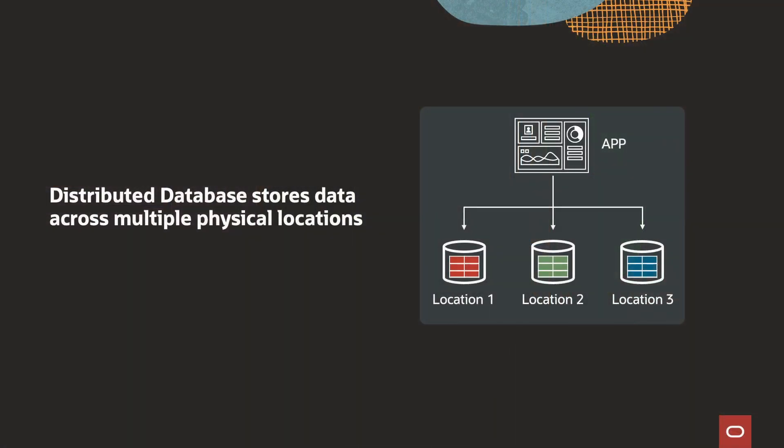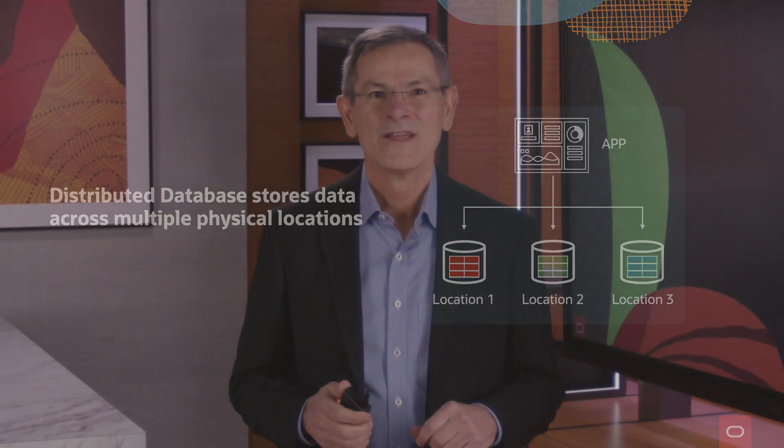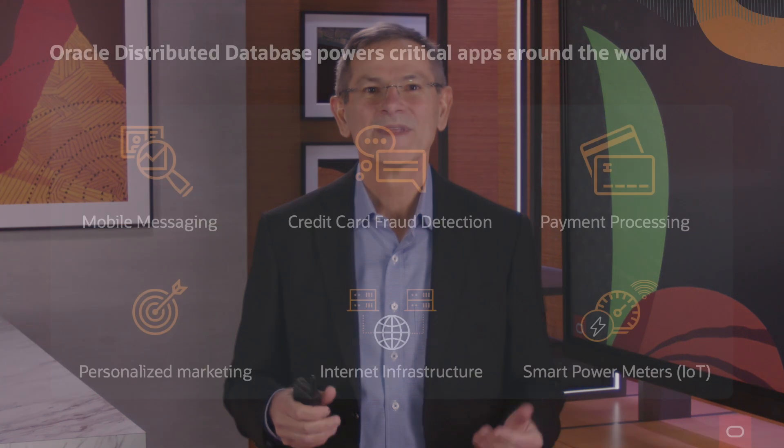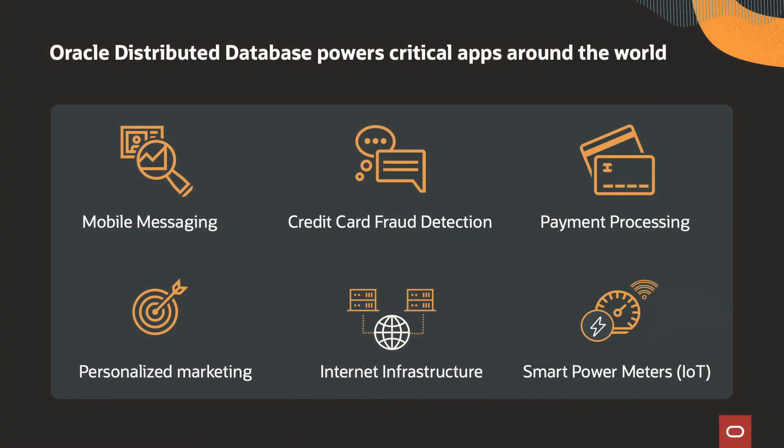First of all, what is a distributed database? It's simply a database that stores data across multiple physical locations instead of one. Each location stores a subset of the data and the physical distribution of data is hidden from applications. The Oracle database became a distributed database back in 2017 when native database sharding was released. Today it powers many critical distributed applications around the world.